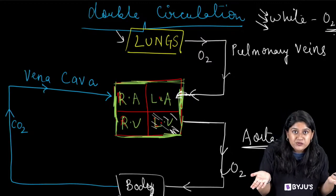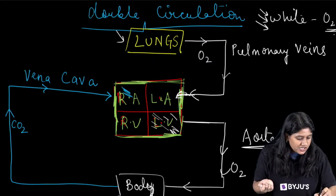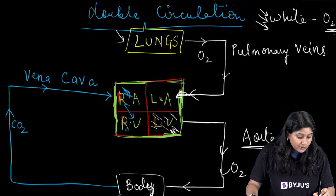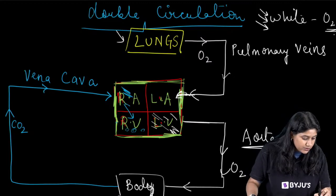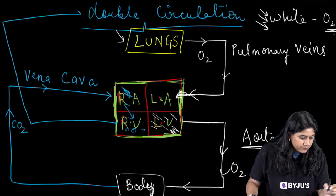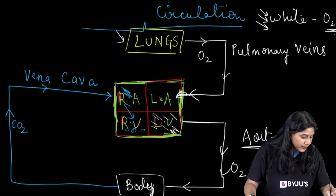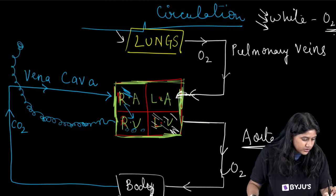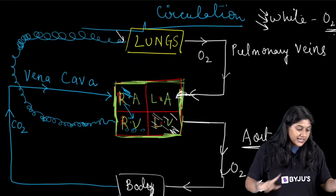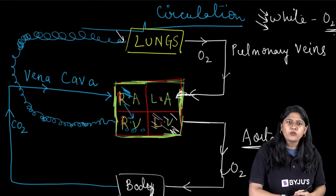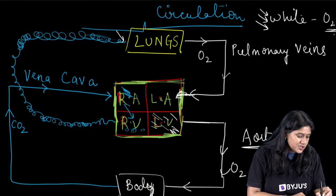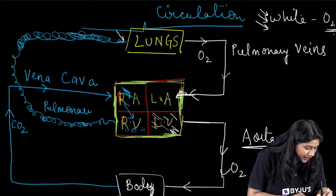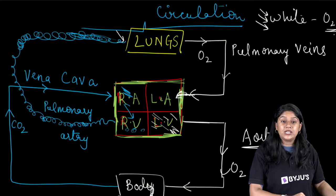From the right atrium, this blood will move to the right ventricle. From the right atrium to the right ventricle, and from the right ventricle it will move to the pulmonary artery. The pulmonary artery carries the carbon dioxide-rich blood from the right ventricle to the lungs.